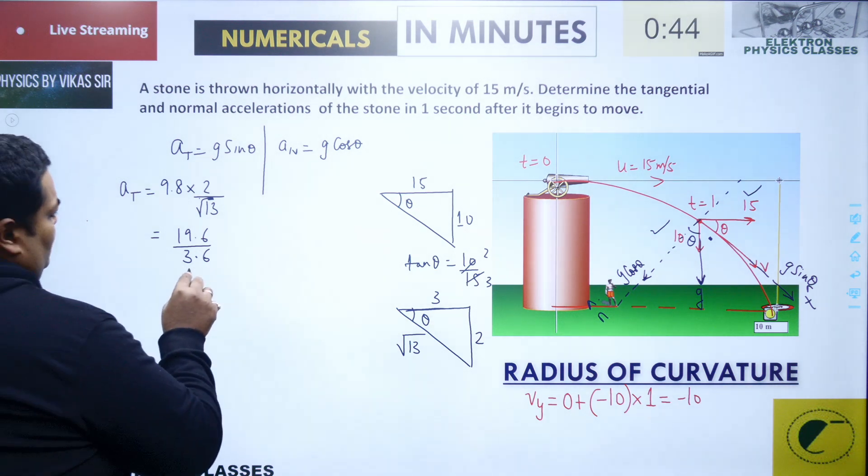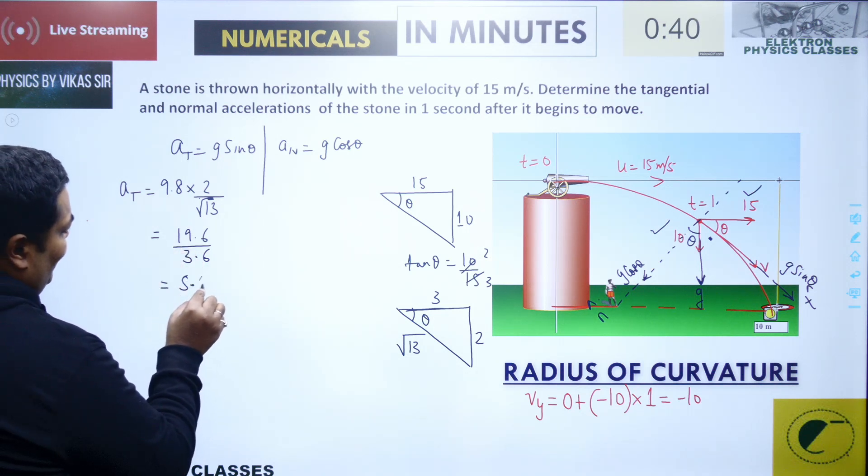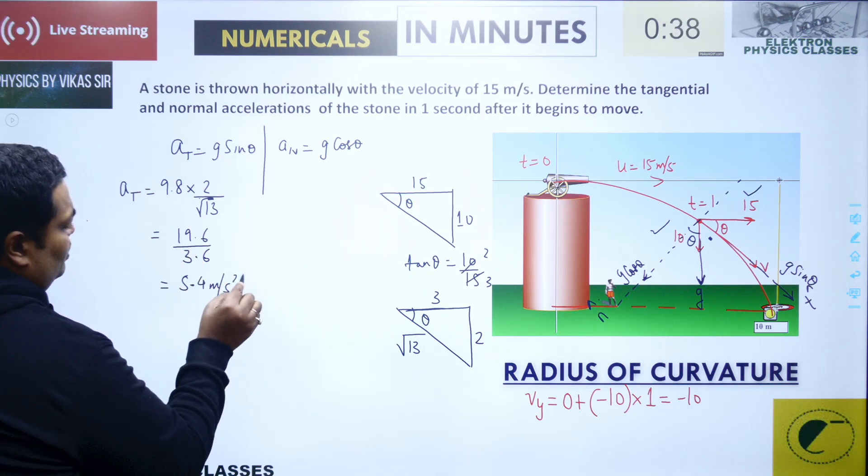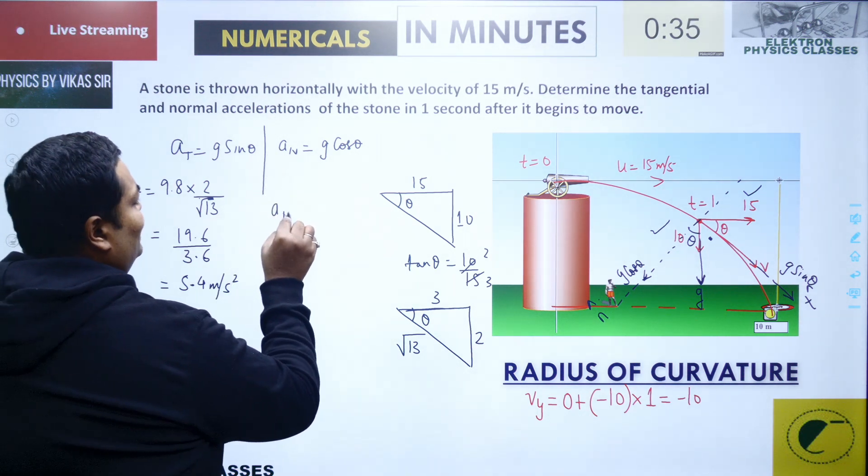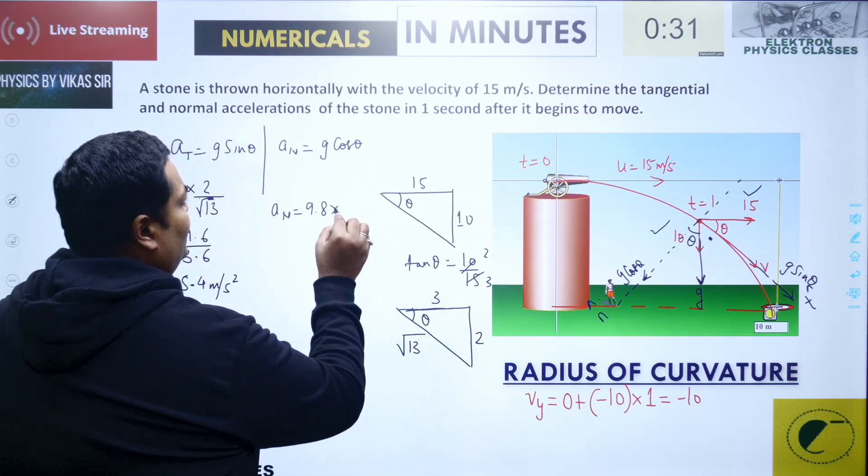This comes to around 5.4 meter per second square—you can calculate it exactly. Now the normal value: that is 9.8 into cos theta. Cos theta is 3 upon root 13.